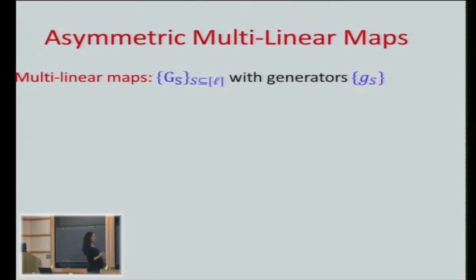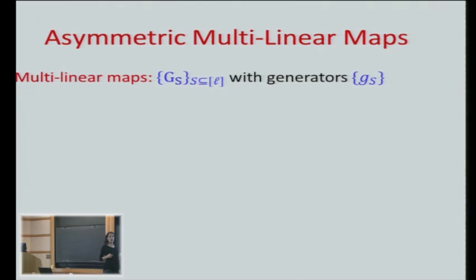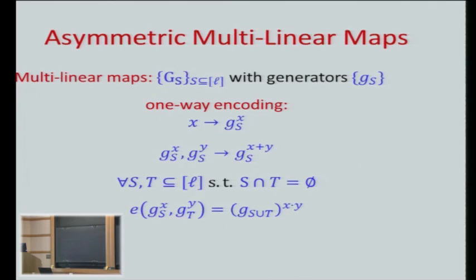Note that I1 can equal I2 — the indices have repetitions. So many steps check the same bit of X. What you can do is evaluate the branching program checking if it's the identity, but be inconsistent: here say X1 equals 1 and here say X1 equals 0 — being inconsistent in evaluation. The way we get around these attacks is we use different groups. We don't encode everything in the same group — we use an asymmetric version of multilinear maps.